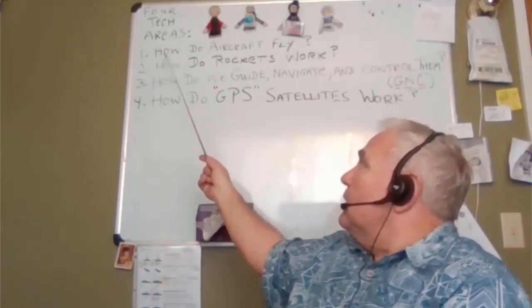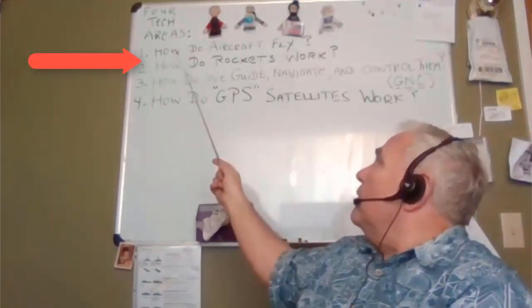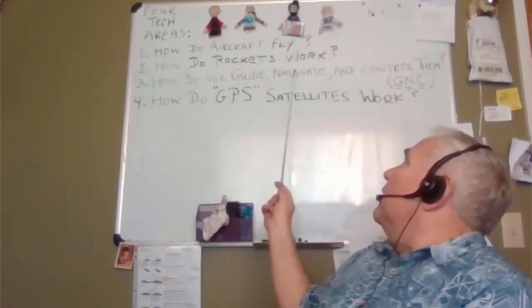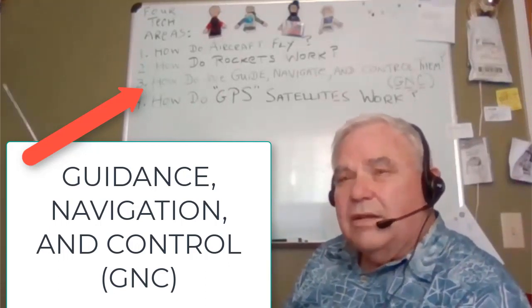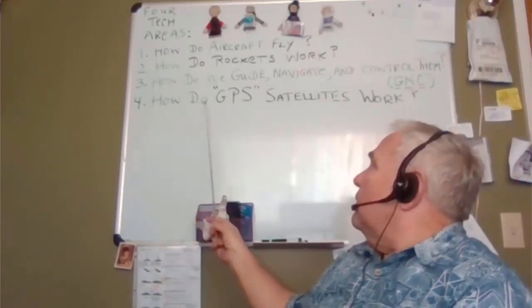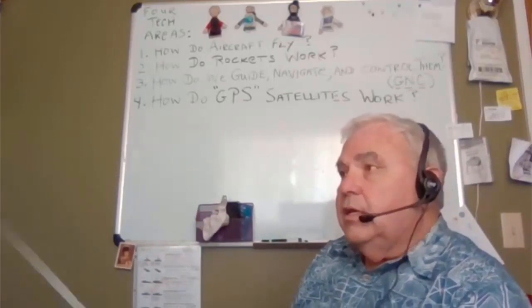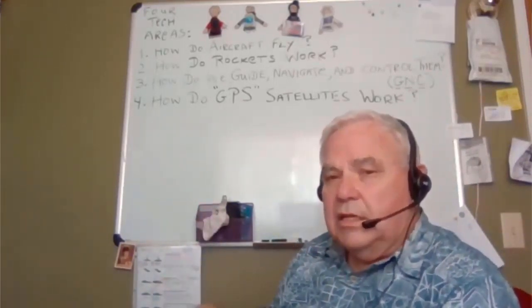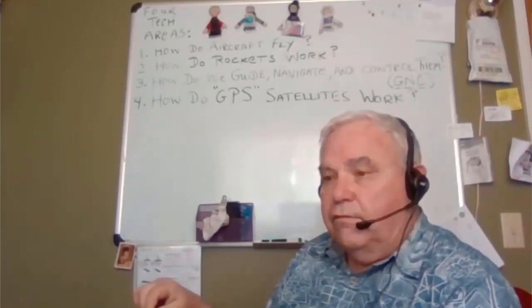The four tech areas and all the topics are: how do aircraft fly, how do rockets work, how do we guide, navigate, and control both of them — that's called GNC for guidance, navigation, and control — and finally, how do satellites work? What key new technologies do satellites use, especially GPS, since GPS encompasses so many satellite technologies, including the one that you use in your cell phone.